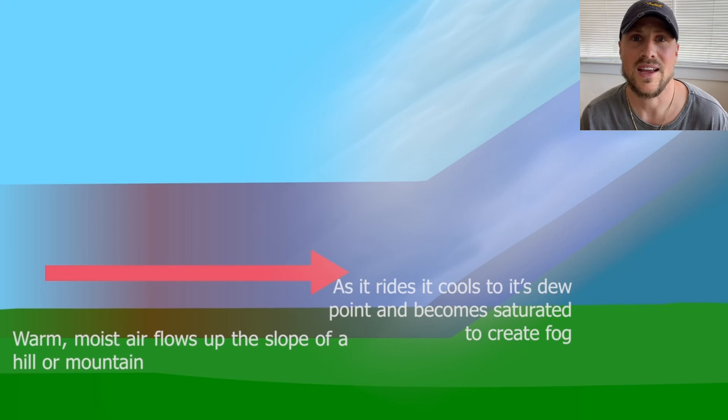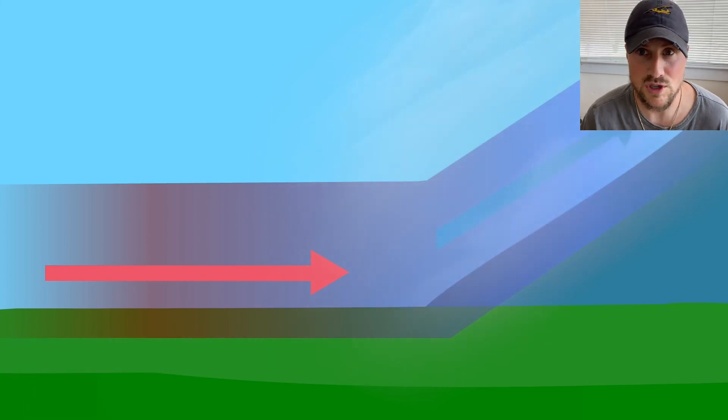Upslope fog can occur a considerable distance from a peak or slope and obscure the visibility of that terrain to approaching aircraft.